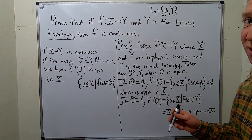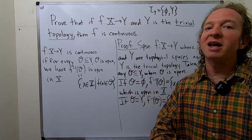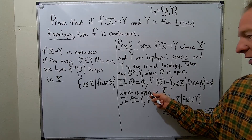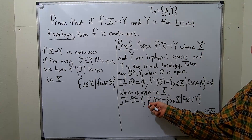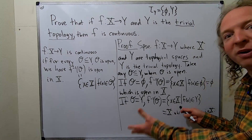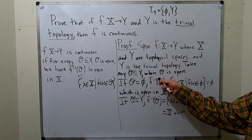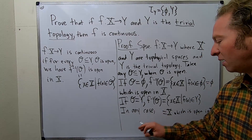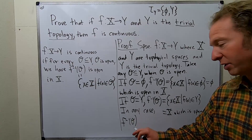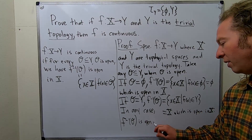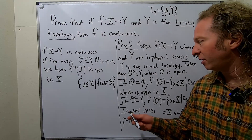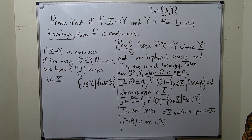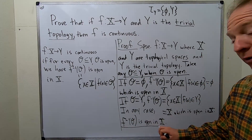Given any topology, there are two sets always in your topology: the empty set and the whole space. So if O is the empty set, the inverse image of O is the empty set, which is open in X. If O is the entire space Y, the inverse image of O is X, the entire space, which is open in X. In either case, the inverse image is open in X. This is precisely the assertion that f is continuous — given any open O subset of Y, we showed that f-inverse of O is open in X.